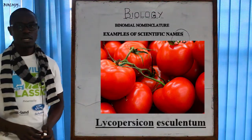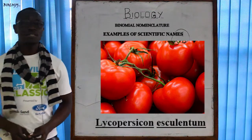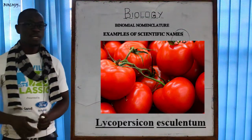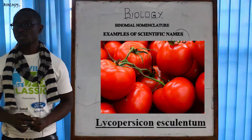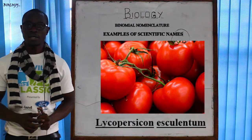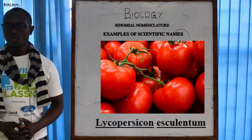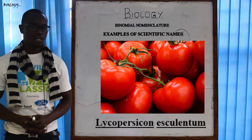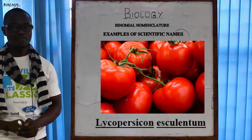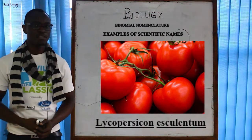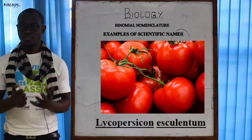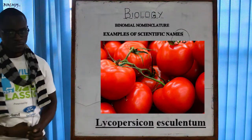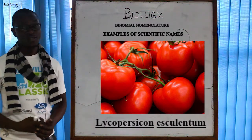The scientific name of the tomato is Lycopersicon esculentum. Maybe next time you go to the shop to buy tomatoes, go like someone who is educated and ask for Lycopersicon esculentum — they might even give you the tomatoes for free! Lycopersicon is the genus name for tomato while esculentum is the specific name.